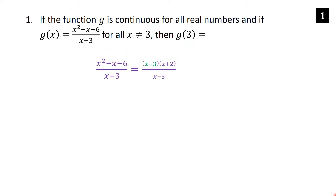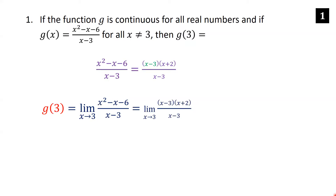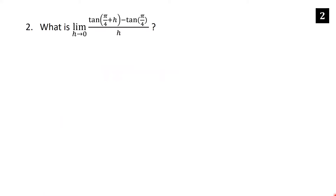Now compute g(3). Since g is continuous, g(3) equals the limit as x goes to 3 of x² minus x minus 6 over x minus 3. We factor the numerator as (x minus 3)(x plus 2), cancel the x minus 3 terms, and get the limit as x goes to 3 of x plus 2. Substituting 3 gives 3 plus 2 equals 5.